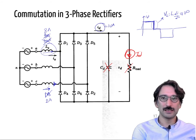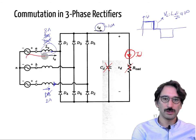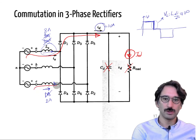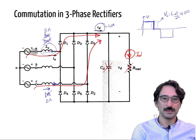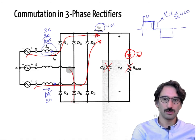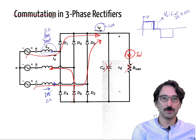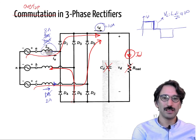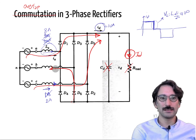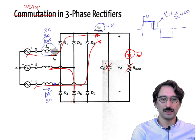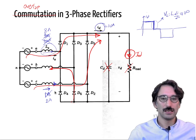During that time, both D1 and D5 are conducting. In this case they are going back through phase B, but during the commutation time — remember commutation also means overlapping time — during that overlap, phase A and phase C conduct at the same point. That is what we call commutation.